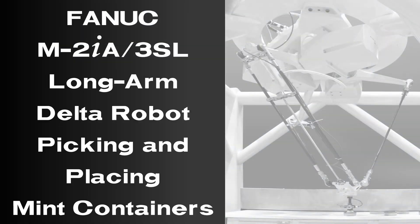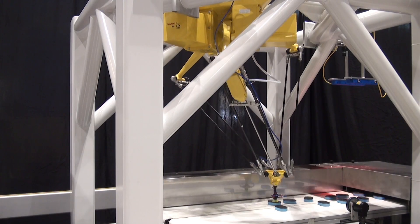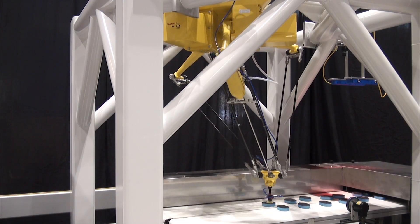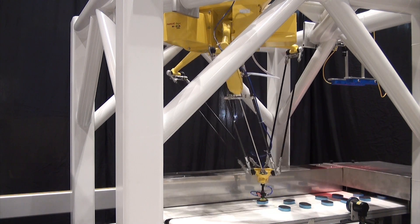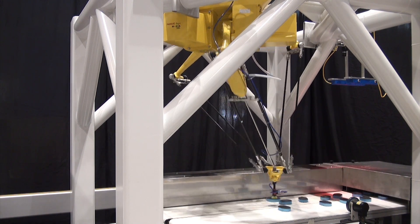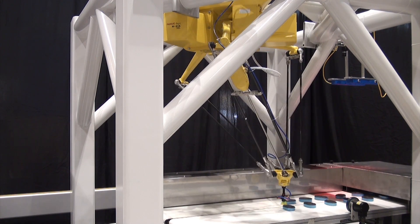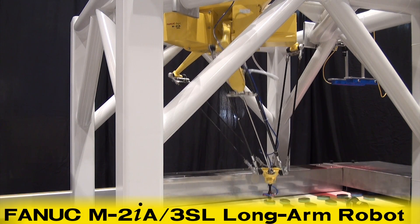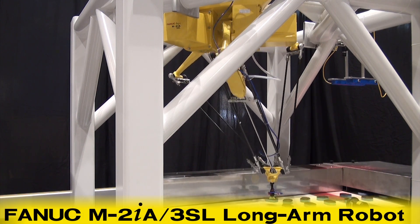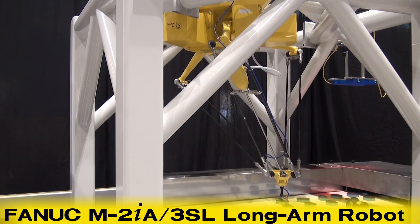The new FANUC M2IA robot is the third in a series of FANUC's high-speed parallel link delta robots that also include the M1IA and M3IA robots. Two new models of the FANUC M2IA robot are available: the FANUC M2IA-3S and the FANUC M2IA-3SL long-arm model seen in this demonstration.